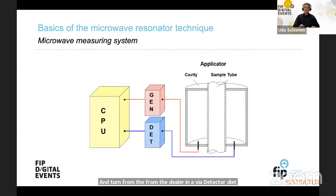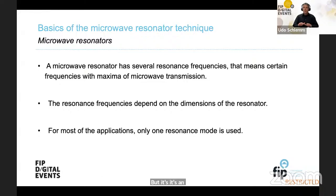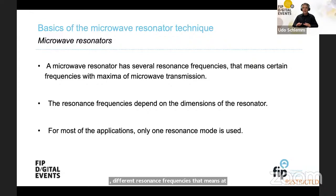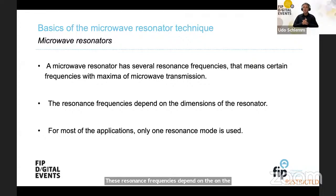In microwave measuring systems, a microwave is generated in a certain range of frequency and coupled into the applicator — the resonator — by a small antenna. By a second small antenna, the transmission of the microwaves through the resonator is measured and turned by the detector diode into voltage. A microwave resonator can look different ways, but it is an object with several resonance modes and different resonance frequencies — at certain frequencies there is a maximum of microwave transmission, and at these resonance modes a standing wave can exist inside the structure. These resonance frequencies depend on the physical dimensions of the resonator, and for most applications only one resonance mode is used.